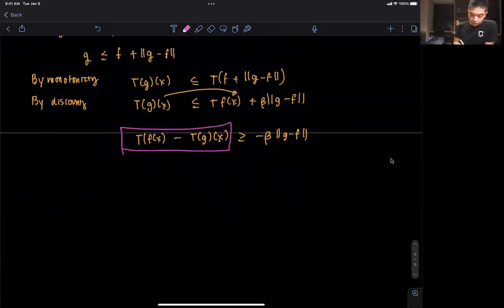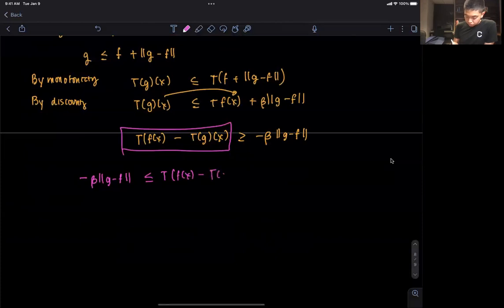So we can say that negative beta ||g - f|| is a lower bound here for this function, T(f)(x) - T(g)(x) less than or equal to beta ||f - g||.